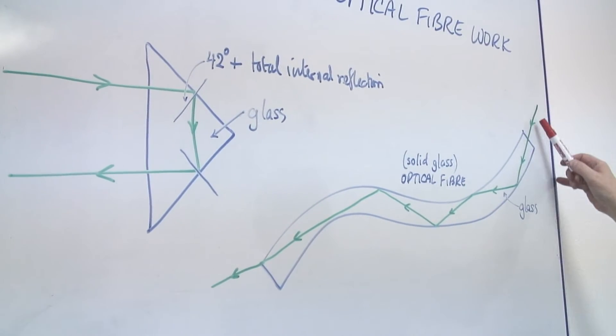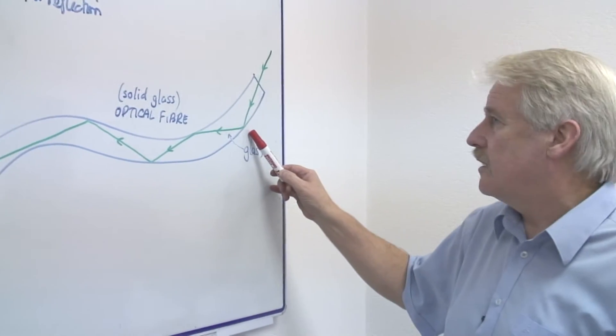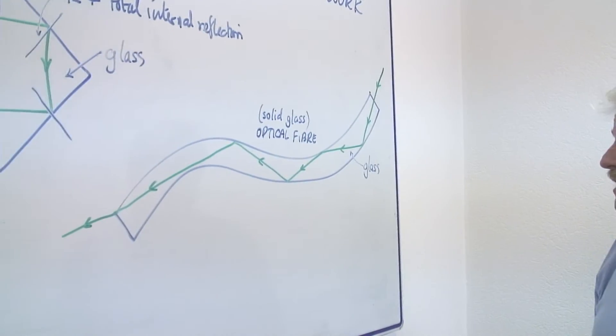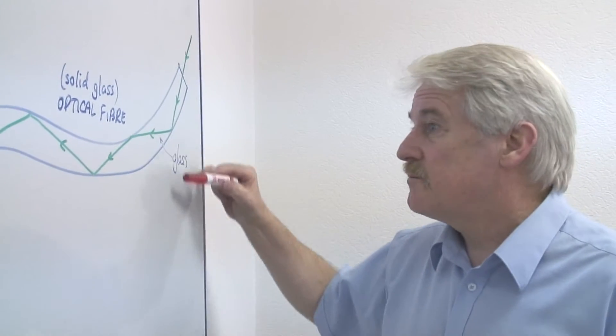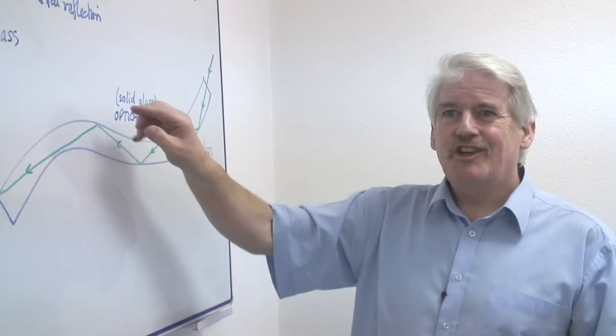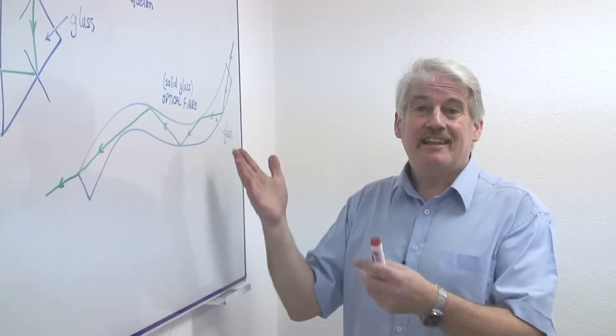The light ray comes in, and because the angle at which it hits the side of the fibre is greater than this 42 degrees, this means that it is reflected. Nothing comes out of the glass. And in fact, fibres are also coated, but they're not coated to keep the light in, they're coated to protect the fibre.